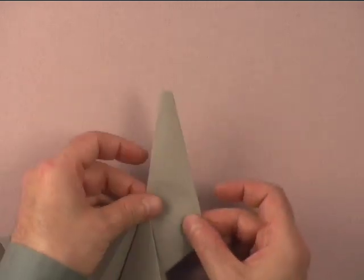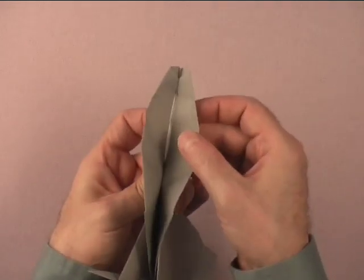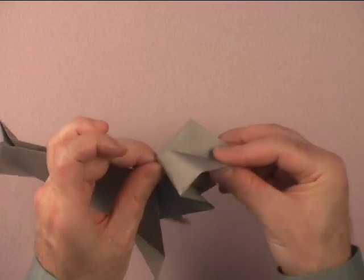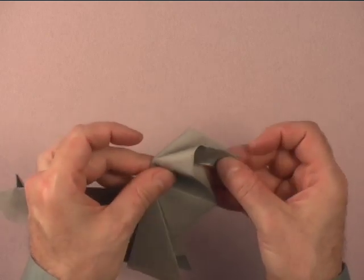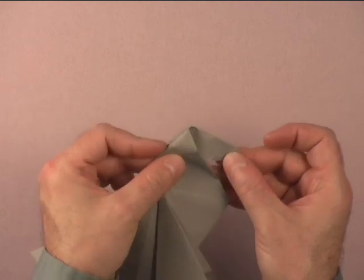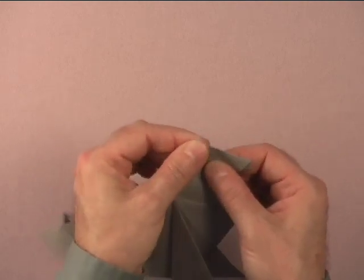For the head, we're going to do an inside reverse fold. So, we're going to open from the front so that we can flatten the head, bending it down. The amount that you choose and the angle is up to you. Whatever looks fine to you is going to be fine and flat.